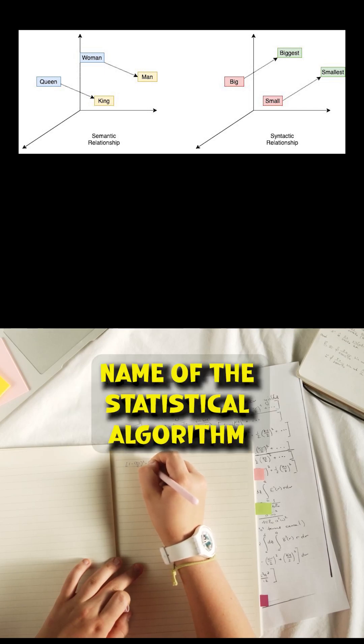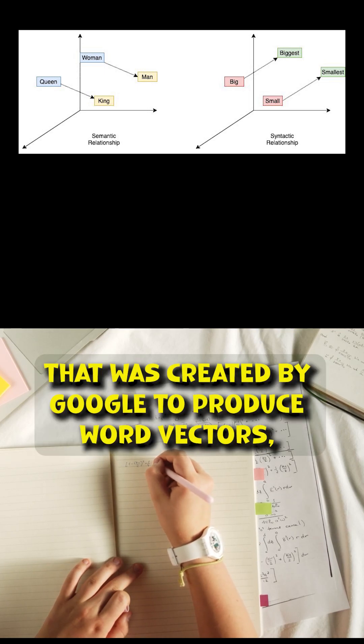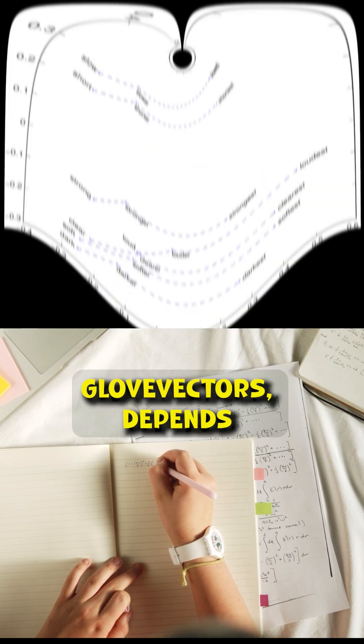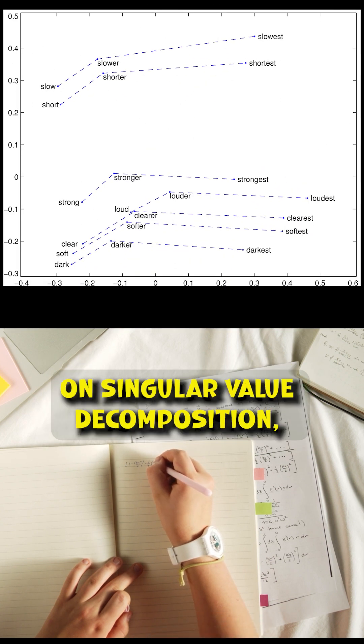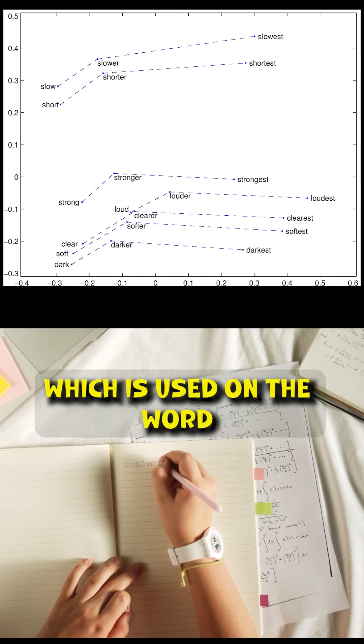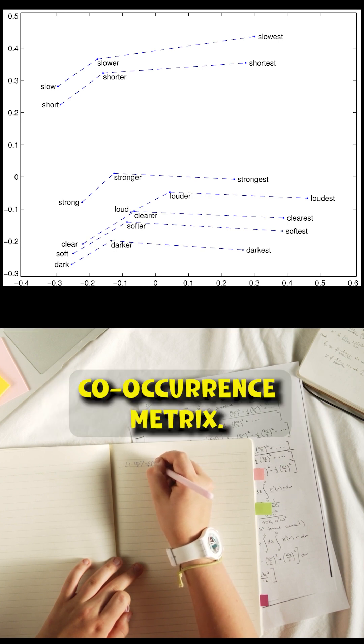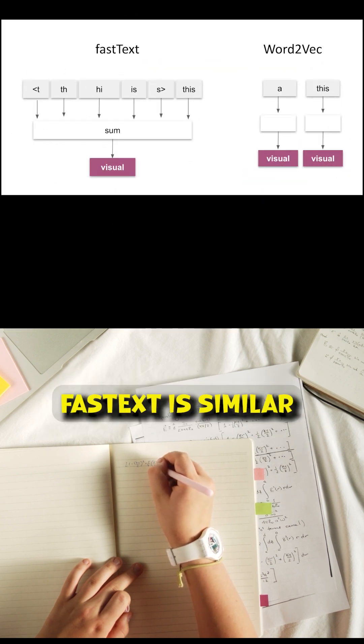Word2Vec is the name of the statistical algorithm that was created by Google to produce word vectors. GloVe depends on singular value decomposition which is used on the word co-occurrence matrix. FastText is similar to Word2Vec